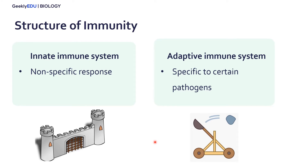Our immune systems are actually composed of two subsystems. The first is our innate immune system, which basically acts as a defense against all types of pathogens. Then we have the adaptive immune system, which is more advanced and very specific to fight certain pathogens — targeting a specific virus and remembering that virus a second time around. If you want to learn more about innate versus adaptive immune systems, you can find the video titled Elements of Immunology, but today we're going to hone in on an aspect of the innate immune system.